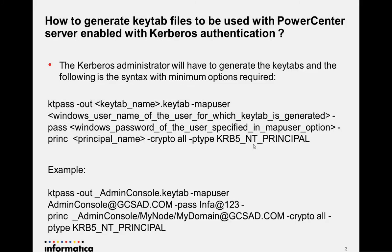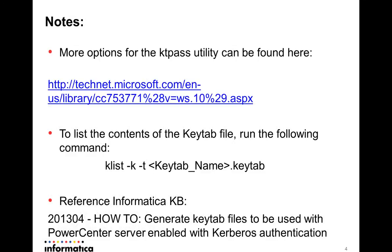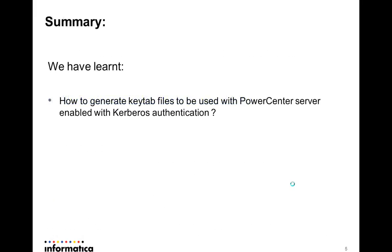In this video we have seen how to generate the keytab file with the ktpass utility. More about the ktpass utility can be found in the referenced Microsoft article. To list the contents of the keytab file, run: klist -k -t keytab_filename. All the steps are documented in the Informatica KB article 201304: 'How to generate keytab files to be used with PowerCenter server enabled with Kerberos authentication.' To summarize: we learned how to generate keytab files, how to list keytab contents, and how to understand the output of the ktpass command.